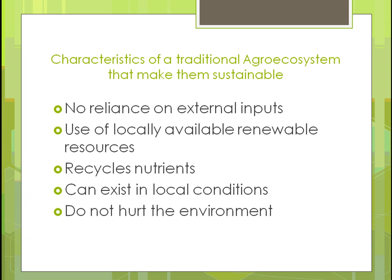Some characteristics that would make a traditional agro system sustainable include reducing reliance on external inputs and using locally available renewable resources — for instance, leaving soil undisturbed and using animals for some harvest tasks. Nutrients should be recycled: putting in cover crops would return nitrogen and other nutrients back into the soil. By leaving harvest residue on top and allowing it to deteriorate naturally, or tilling it in slightly, you're putting nutrients back into the soil.